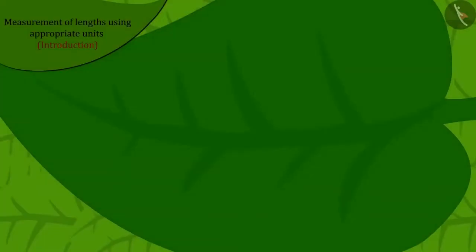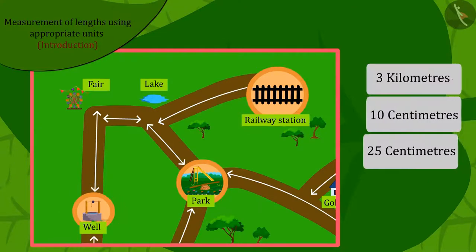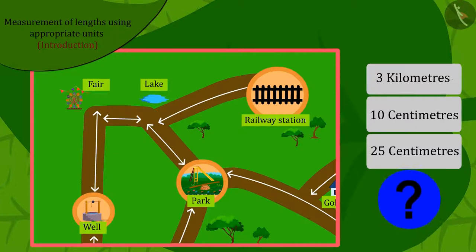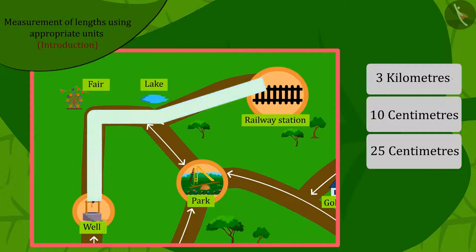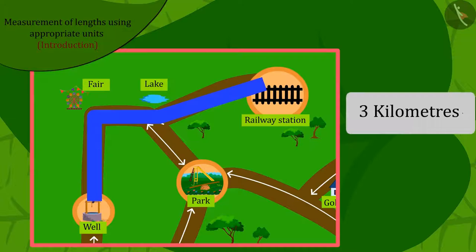Kids, if Chanda had written the distance between the railway station and the well on a paper, which of the following could it be? If you want, you can pause the video and find the answer. Well done, kids! You have found the right answer! Because the distance from the railway station to the well is very long, we cannot measure it in centimeters. Therefore, the distance from the railway station to the well will be 3 km.